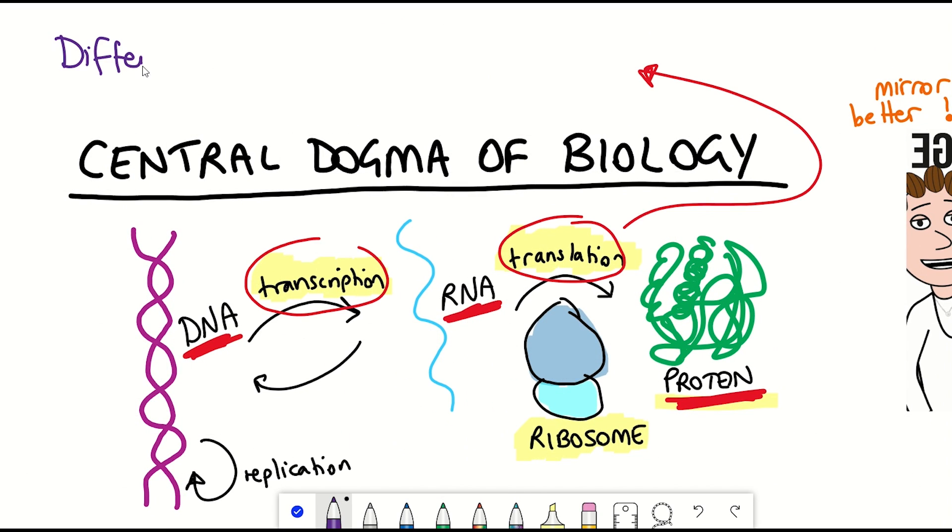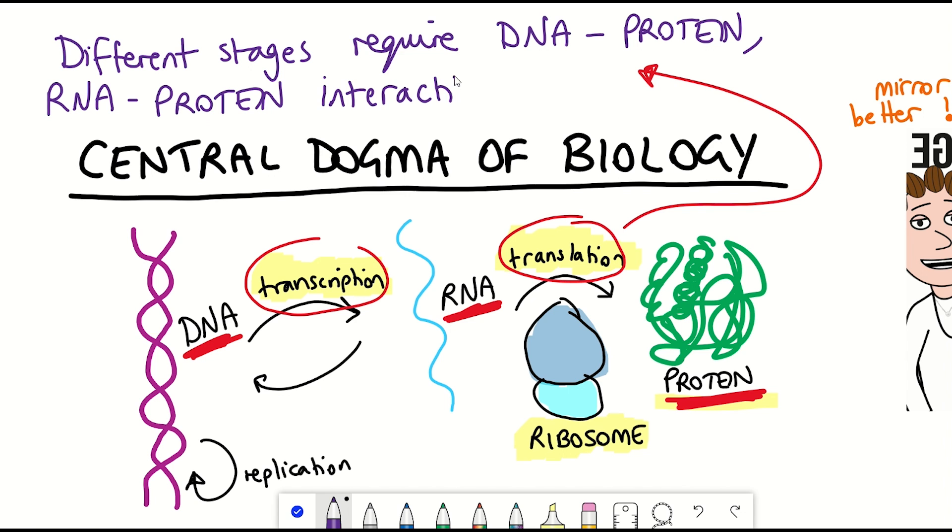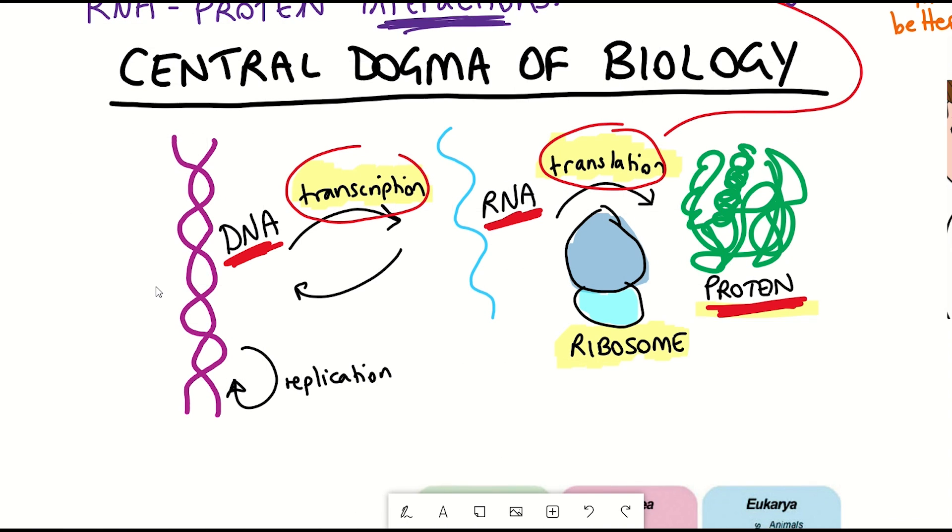And now we can go back to talking about chirality, and how we have D-DNA, and we have L-proteins, and how this whole process depends on interactions between proteins, RNA, and proteins and DNA, and RNA-DNA interactions.